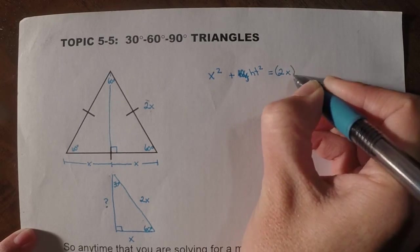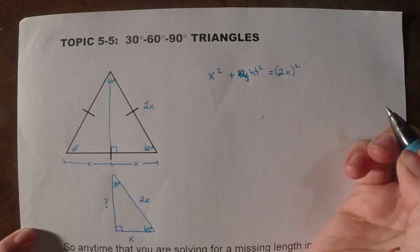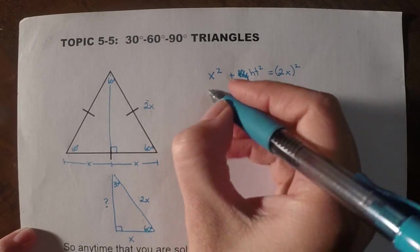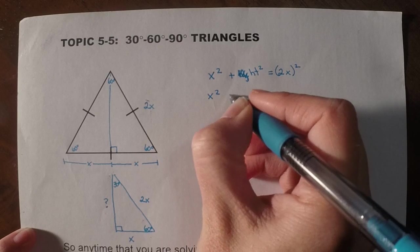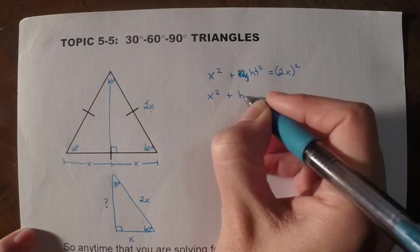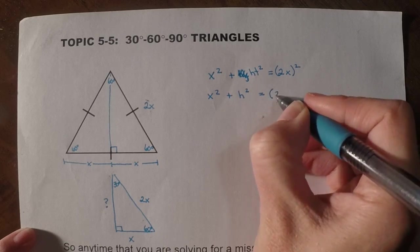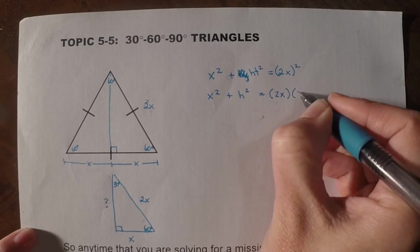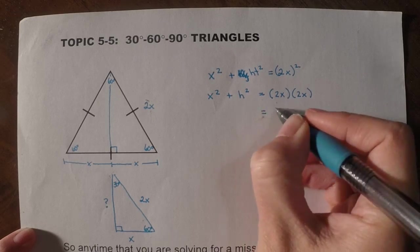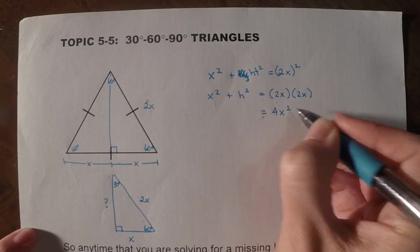would equal the hypotenuse squared, which is 2x, and that whole quantity squared. So if I work through this, I now have x squared plus h squared, and then here, remember this would be 2x times 2x. So if I multiply that, I get 4x squared.